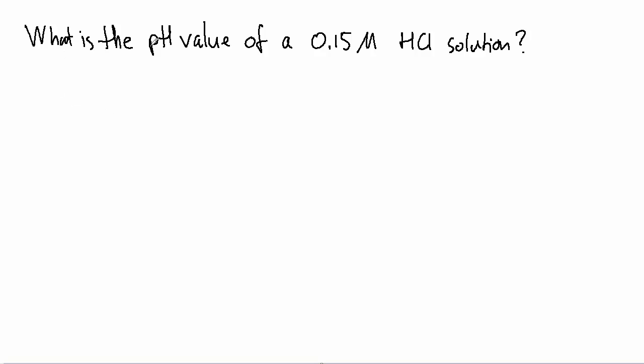In this example, I'm going to find the pH value of a 0.15 molar HCl solution. The formula for the pH is simply the negative log of the concentration of the hydrogen ion.